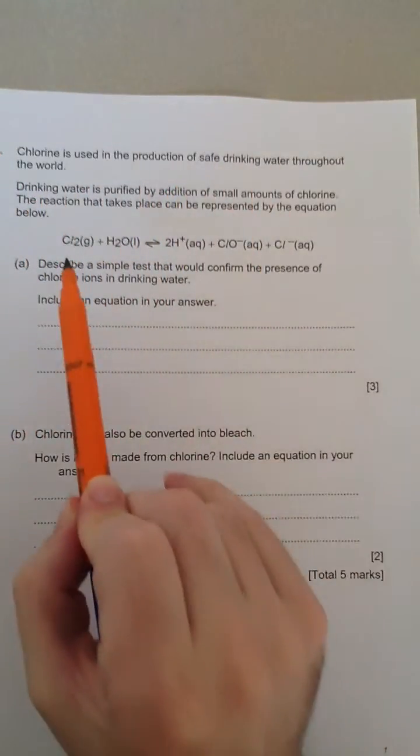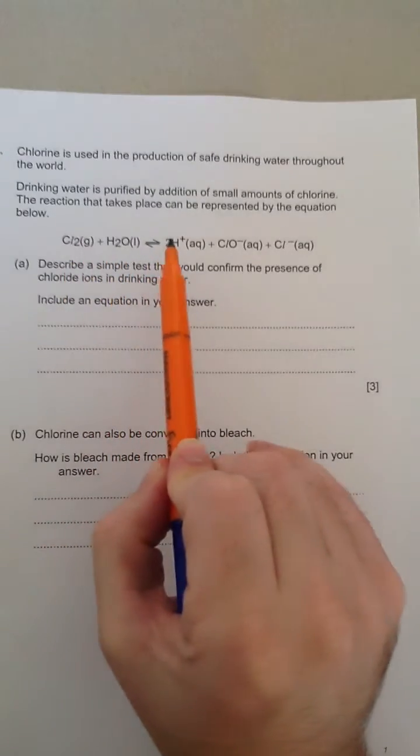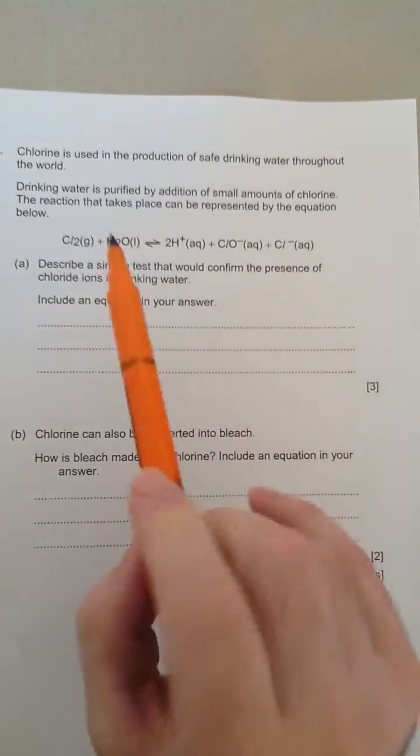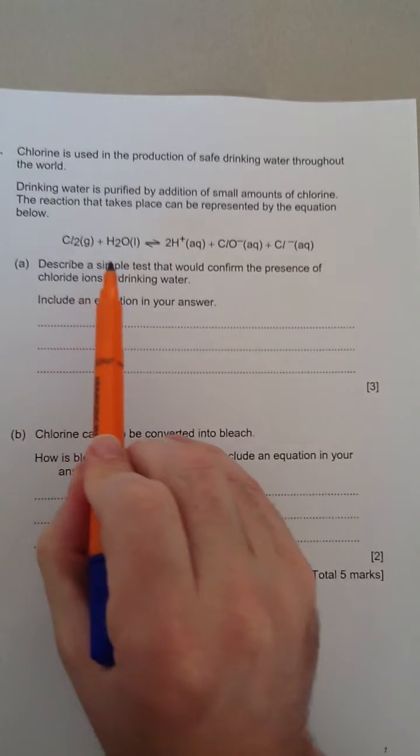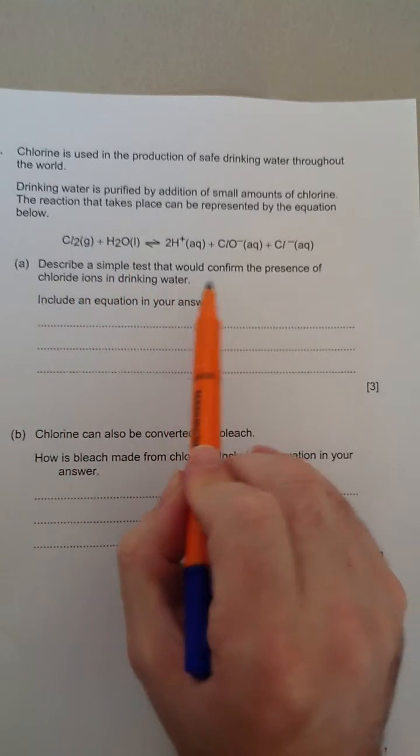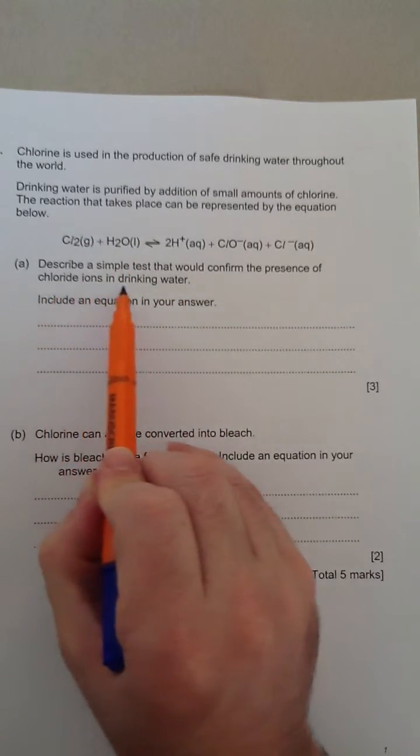You're given an equation, Cl2 plus H2O goes to 2H plus plus ClO minus plus Cl minus. And the first part of the question says, describe a simple test that would confirm the presence of chloride ions in drinking water.